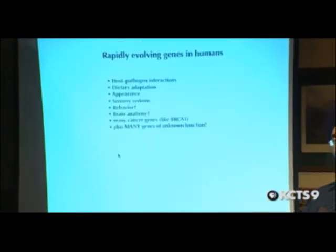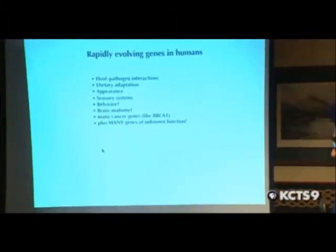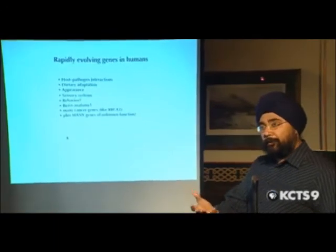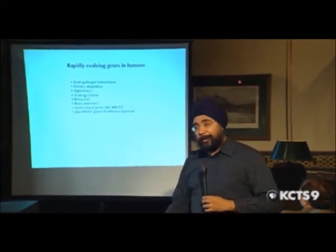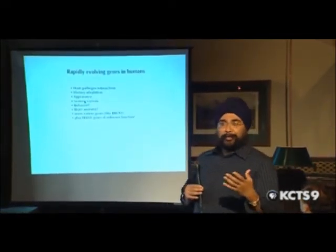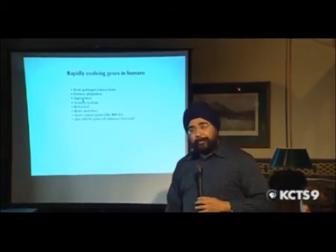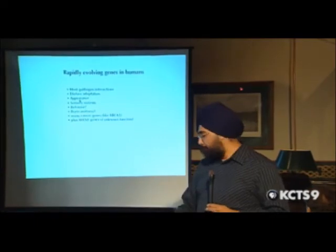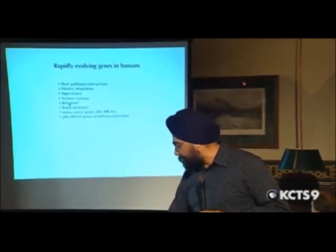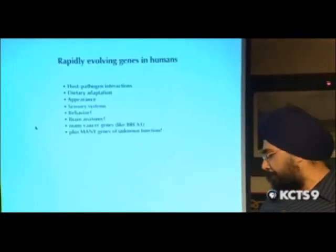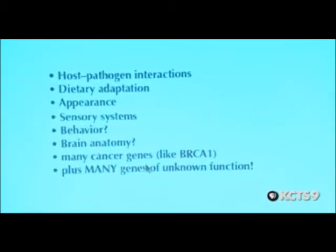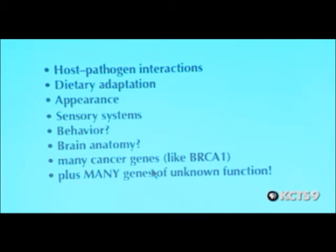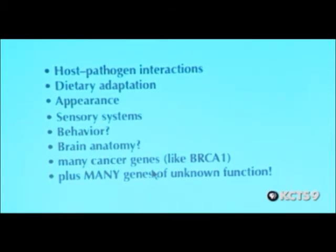I'll end with examples of rapidly evolving genes that we are interested in. Many are involved in host-pathogen interactions — you can see why, because these are all arms races. But then there are many we can't completely explain, such as dietary adaptation, appearance, and sensory systems. Parts of brain anatomy are also all very rapidly evolving genes. What my group is very interested in is why cancer susceptibility genes, including BRCA1, are some of the fastest evolving genes, and whether there's an undercurrent of an infectious disease agent that we are missing because of all our studies.